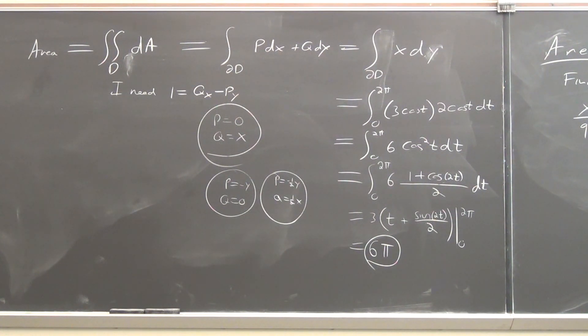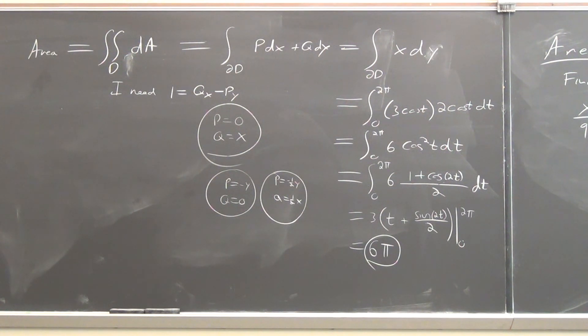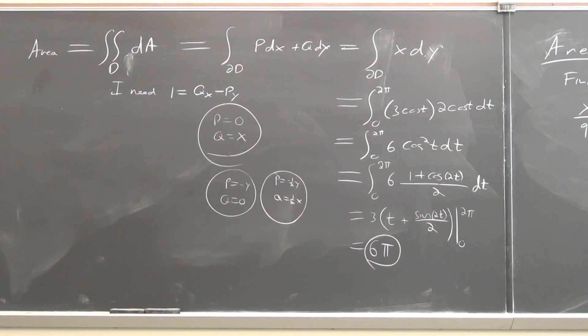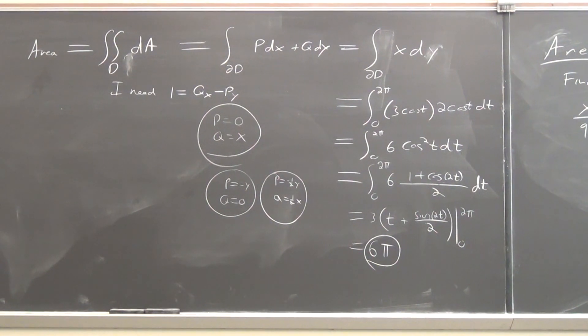The choice of P and Q was completely arbitrary — we just needed Q sub x minus P sub y = 1. Once you have that, you write up the line integral and things proceed easily. Any questions? That's the last tricky thing you might see in Section 15.4.